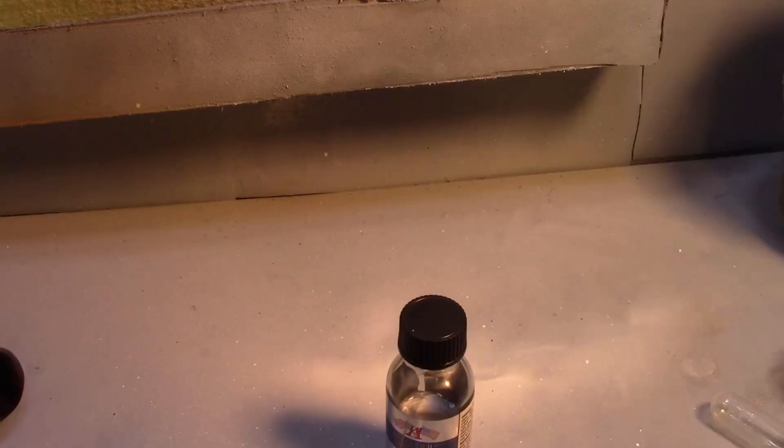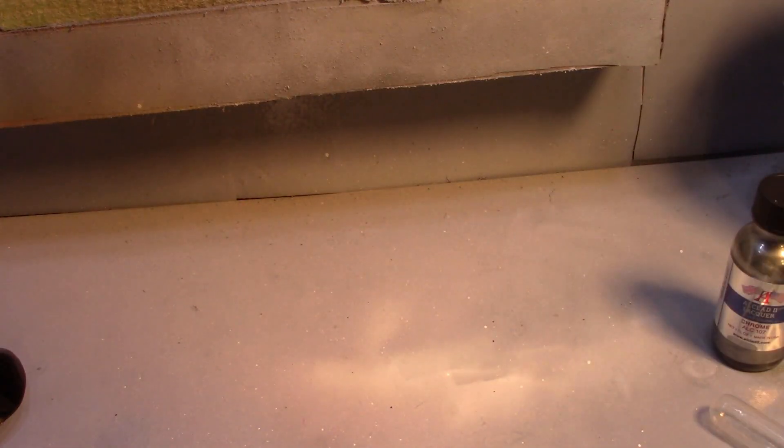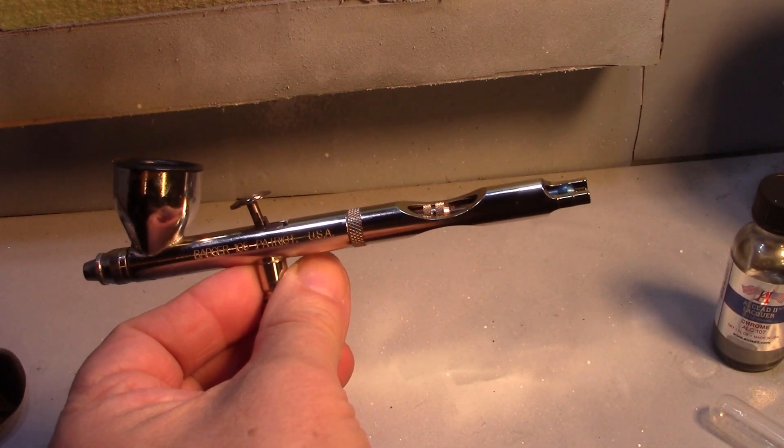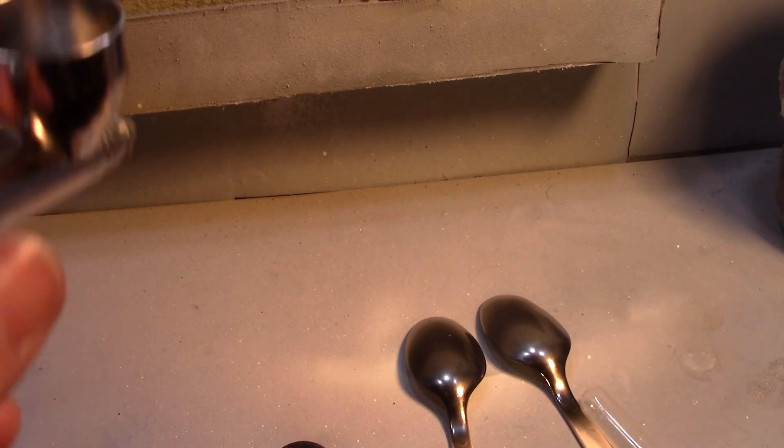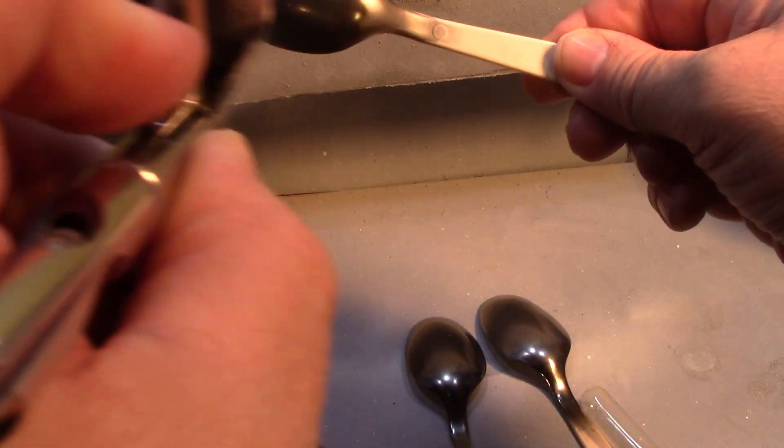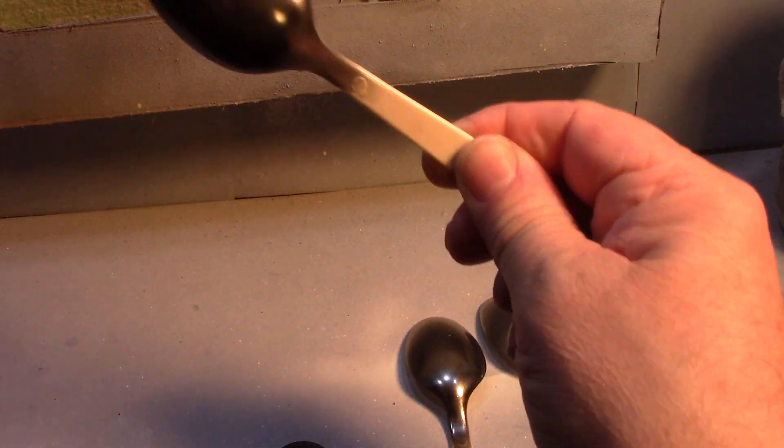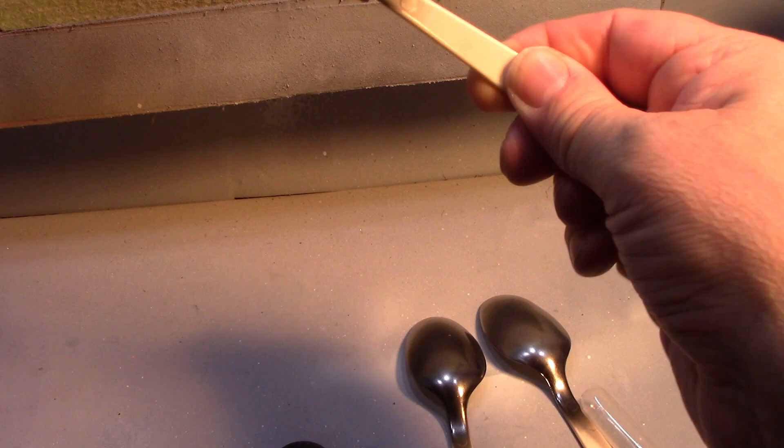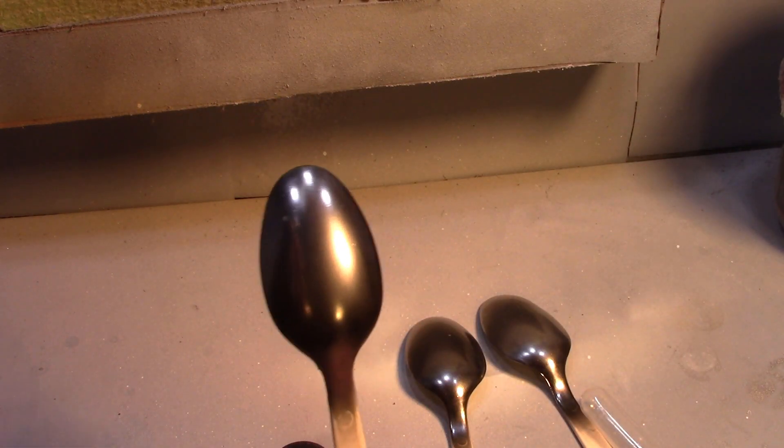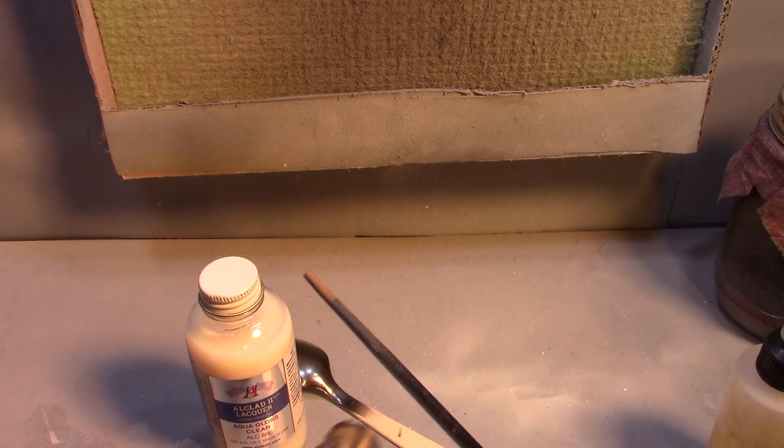Make sure you shake that up well. I'm using my Badger Patriot with a 0.5 needle in it. So I'm gonna turn on the spray booth. Oh yeah, I can see my reflection in there. Okay, not bad, not bad. Okay, I'm gonna try Aqua Gloss over this, see what happens.